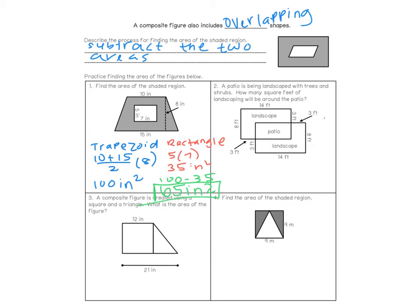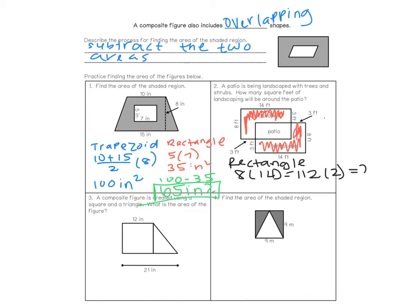The next problem says a patio is being landscaped with trees and shrubs — how many square feet of landscaping will be around the patio? The shaded portion represents what's being landscaped. I have two identical rectangles, both 8 by 14. Finding the area of the rectangles: 8 times 14 is 112, and since there are two rectangles, I multiply by 2 to get 224.